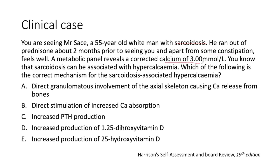...a corrected calcium of 3 mmol/L. You know that sarcoidosis can indeed be associated with hypercalcemia. Which of the following is the correct mechanism? Is it A: direct granulomatous involvement of the axial skeleton causing liberation of calcium from bone, or is it B: direct stimulation of increased calcium absorption from the gut?